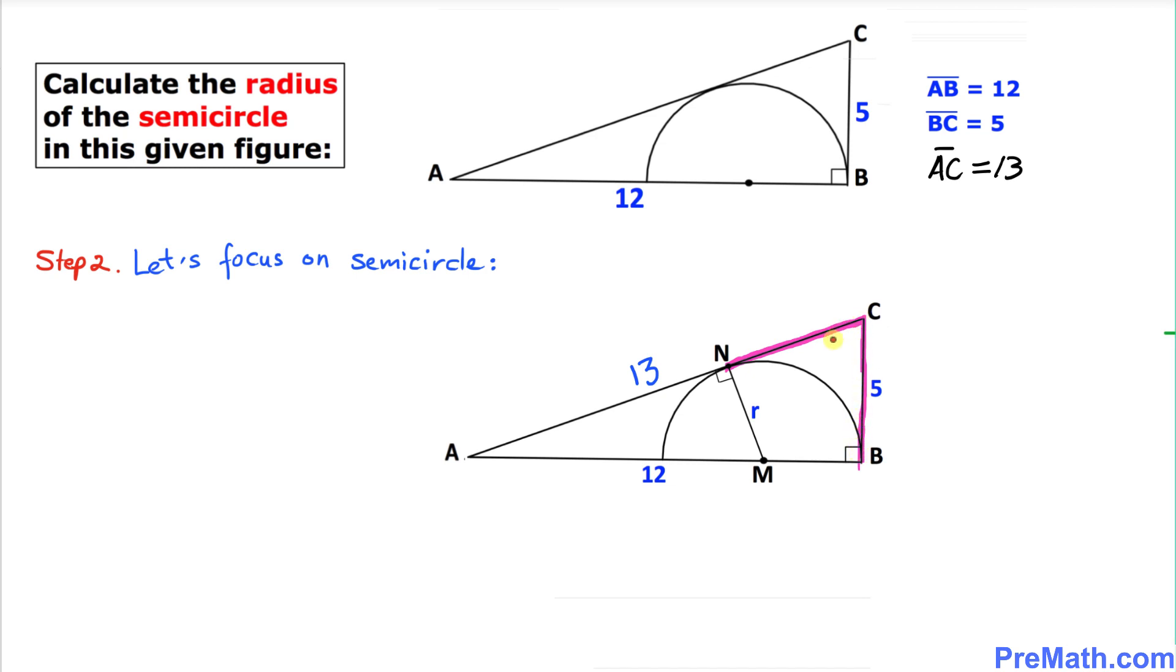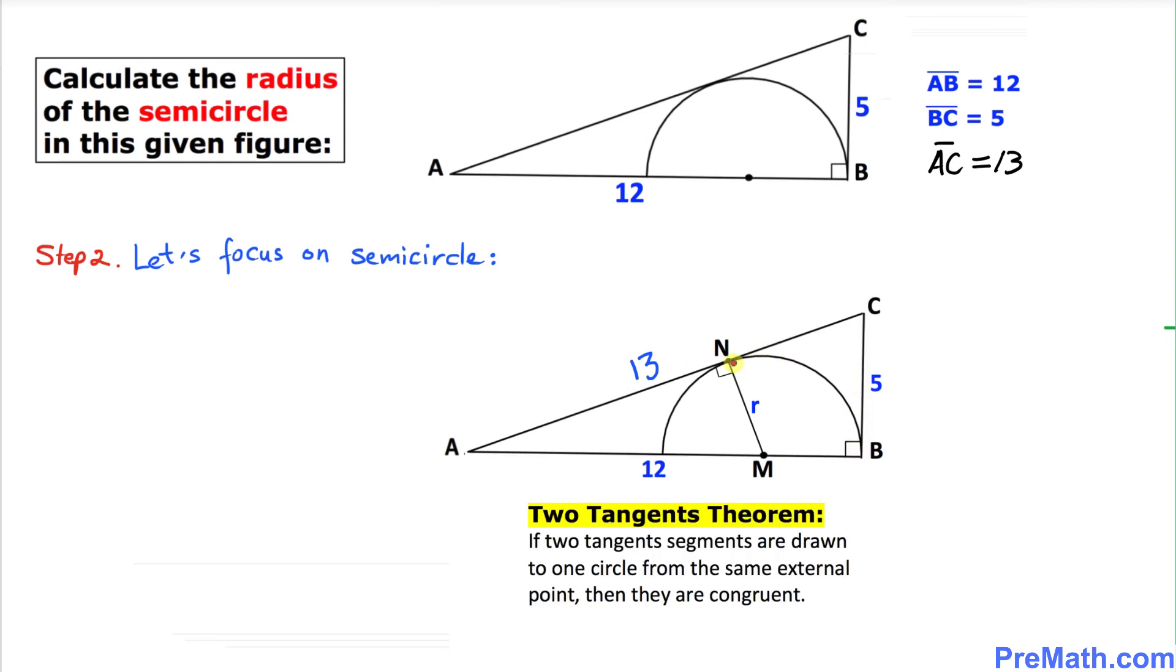As we can see, these line segments NC and BC are tangents to this circle. According to the two tangents theorem, these two line segments are going to be congruent.